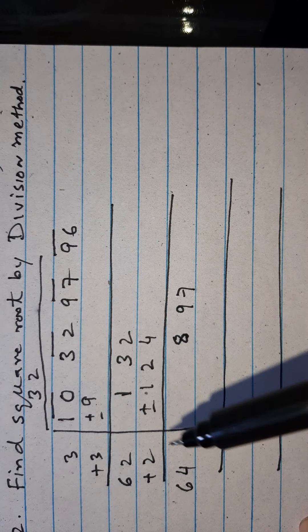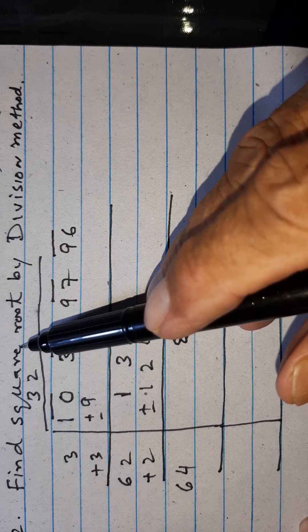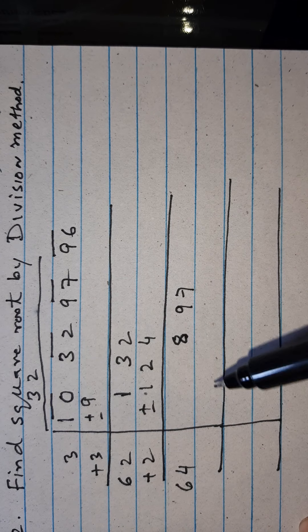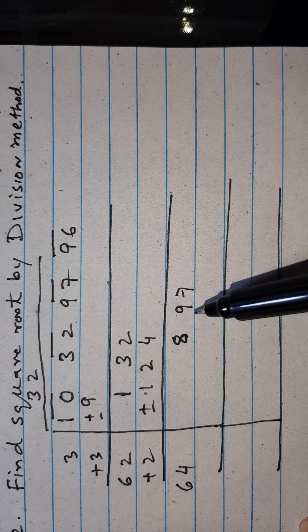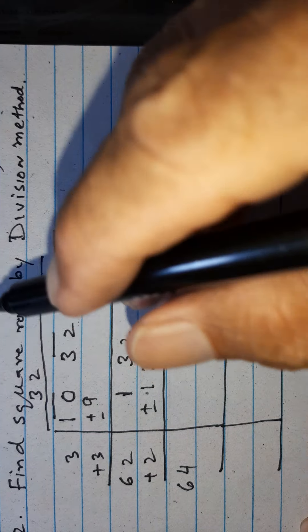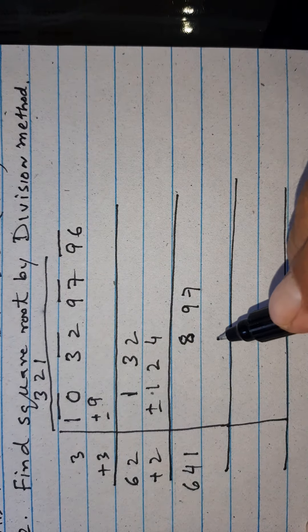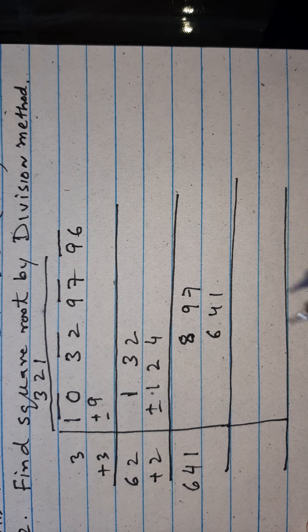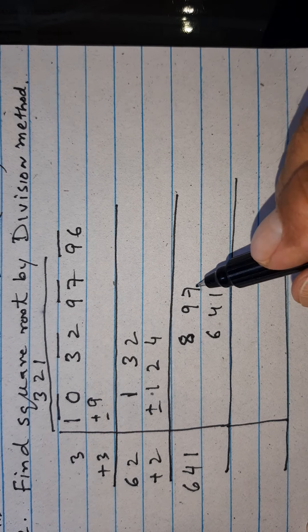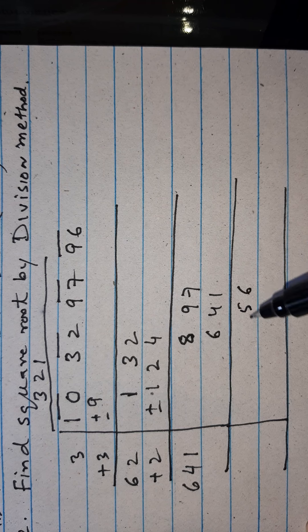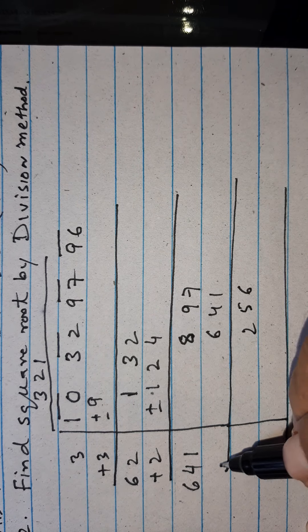Now if we write here 2 and 2 here, this will be 2 times 6 is 12. This will be greater than 897. Therefore we must write here 1 and 1 here. This becomes 641. And here this will be 6, 5, 2, and this one we should add here.